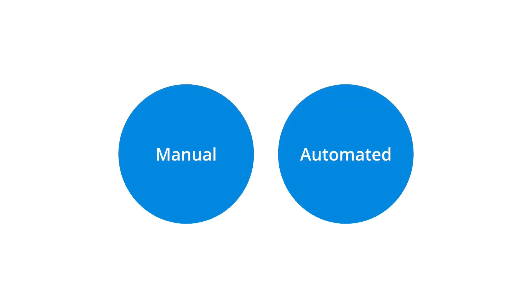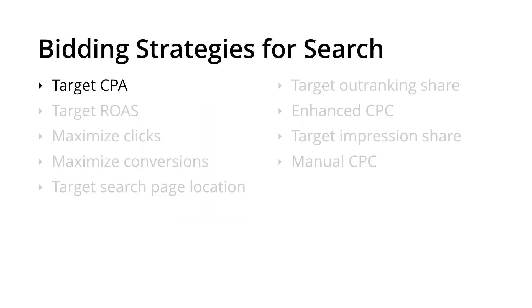When it comes to our Google Ads campaigns, we can choose from a manual bidding strategy, where we set the maximum we want to spend on any given click, or we can use an automated bidding strategy, which is designed to achieve a particular result based on our campaign objectives. For our search campaigns, we can select from a range of different bidding strategies.